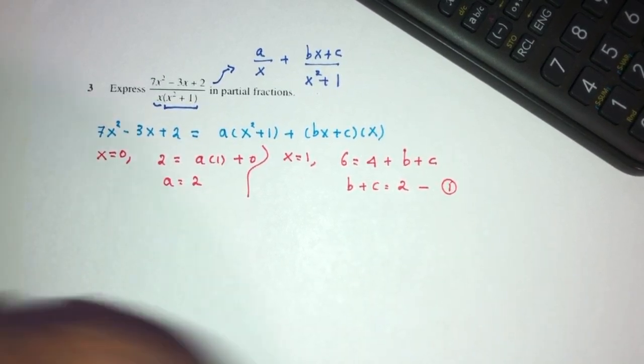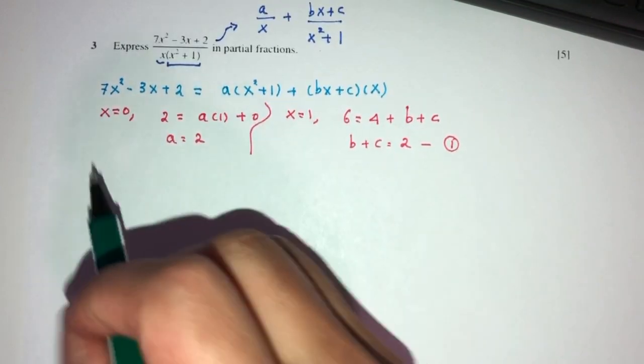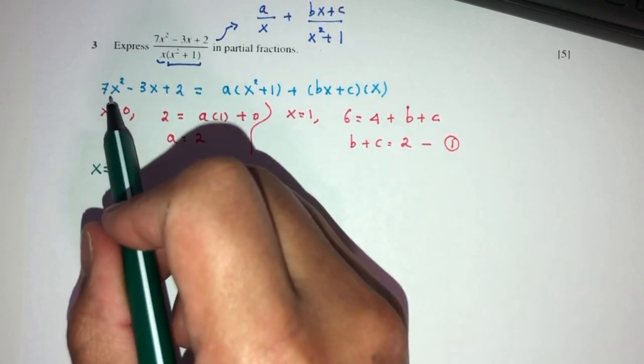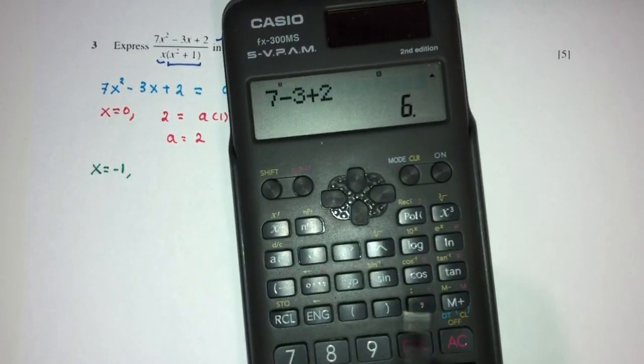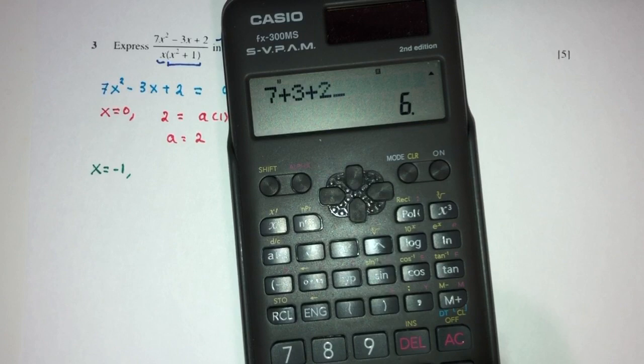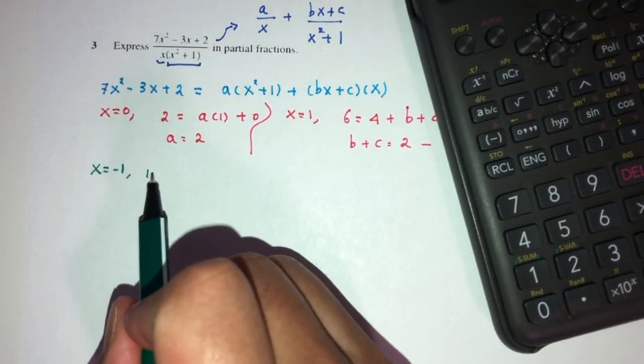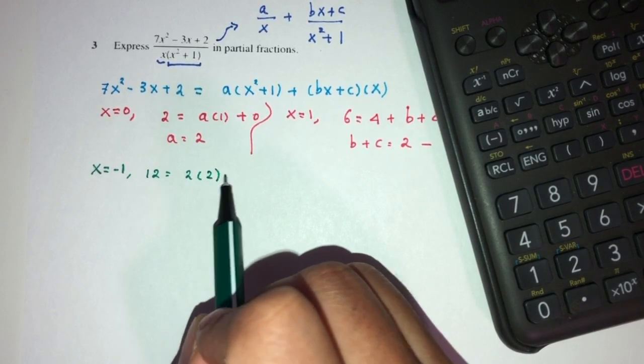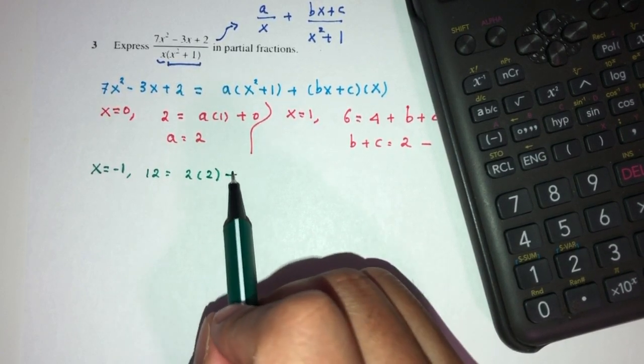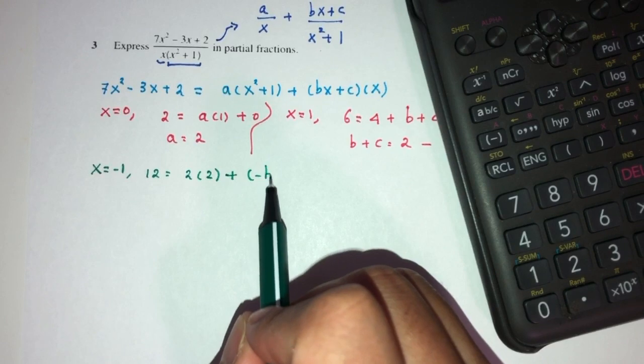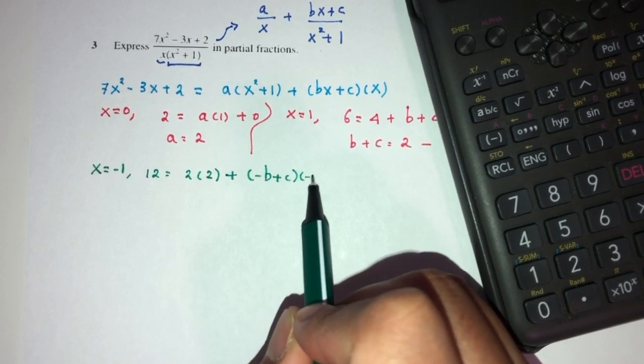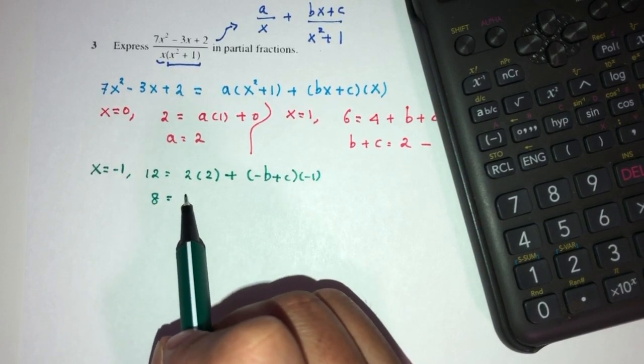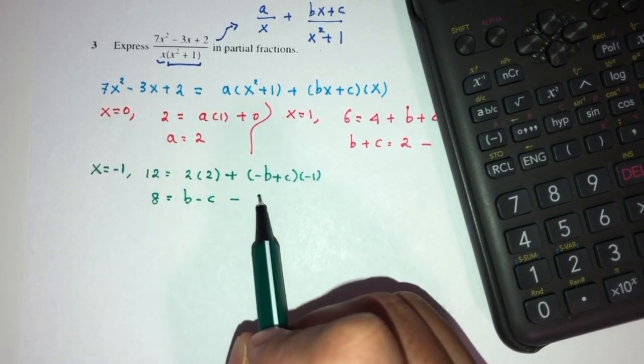Now, let's see what's next. I have to use something else. Let me choose x equal to minus 1. This will become 7 plus 3 plus 2. That will be 12. 12 is equal to... a is 2. That should be 2 times 2. Plus... minus b plus c times minus 1. That will be 4 here. 12 minus 4 is 8. And that should be b minus c. This is my equation number 2.